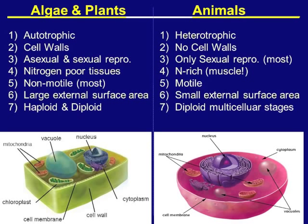Now let's look at animals. 1. They're heterotrophic. 2. They don't have cell walls. 3. Only sexual reproduction — though many animals do have asexual reproduction. 4. They're nitrogen-rich, seen in muscle; it's bioaccumulation of nitrogen compounds via being heterotrophic. 5. They're typically motile with some exceptions. 6. They have a small external surface area. 7. They have diploid multicellular stages.